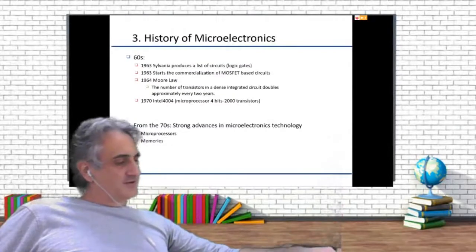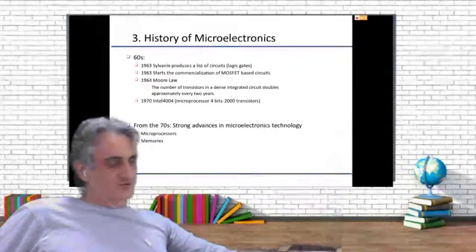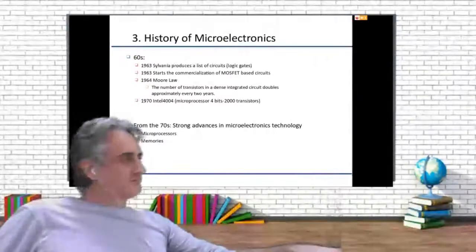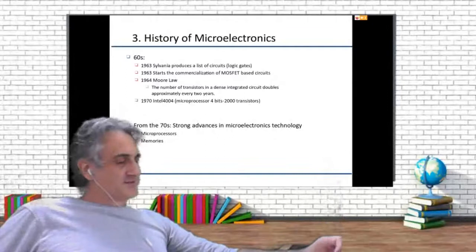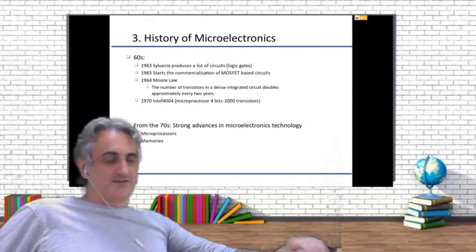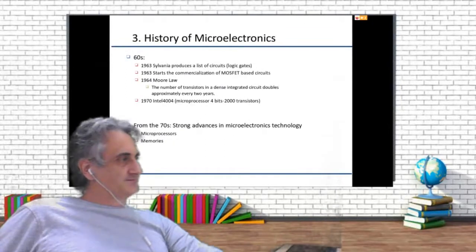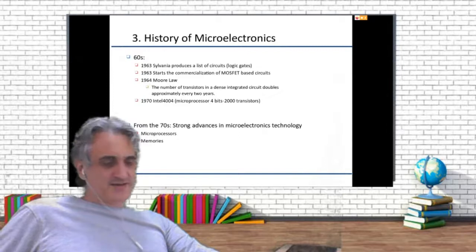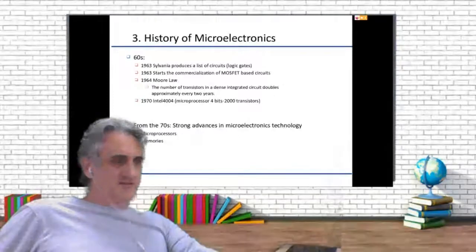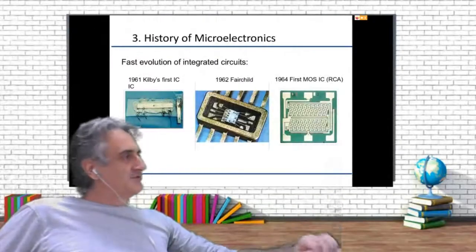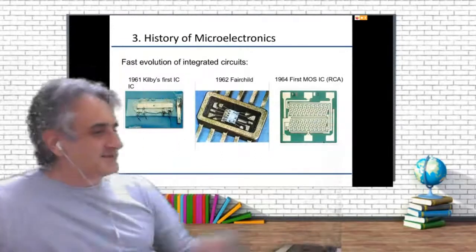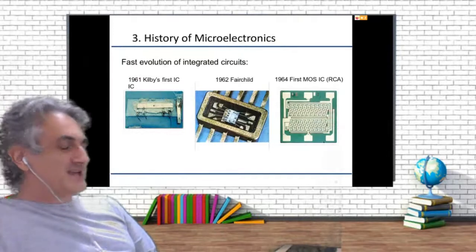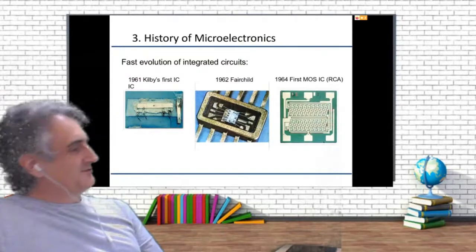From the 70s onward, the electronics field exploded — microprocessors, memories, solar cells, everything. Just to give you a feeling of how integrated circuits have been evolving during these years: the first integrated circuit by Jack Kilby was done by hand with some kind of resin, different elements, and cables put by hand.